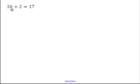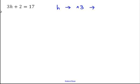On the first one here, our unknown value is h, and we've got 3h plus 2 is equal to 17. I'm going to show you how to do it using both the flowchart and algebraically, and you can choose whichever method you like best. So using the flowchart first, we start with h, and the first thing that happens to h is it's multiplied by 3, and then we add 2 to it.